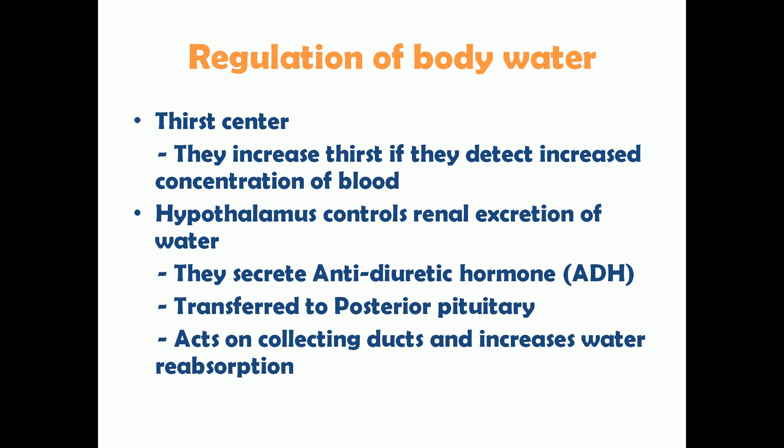The hypothalamus also regulates body water. There is a thirst center in the hypothalamus that increases thirst when it detects an increased concentration of blood. When the blood flowing to the thirst center is concentrated, it stimulates the thirst center, which increases thirst in the individual. The person then drinks water and the blood becomes diluted.